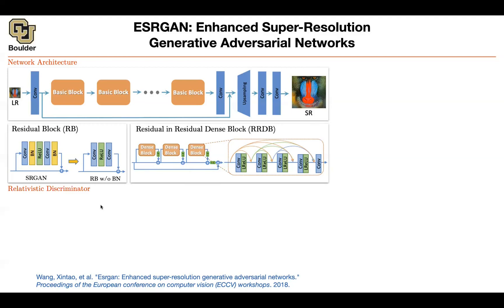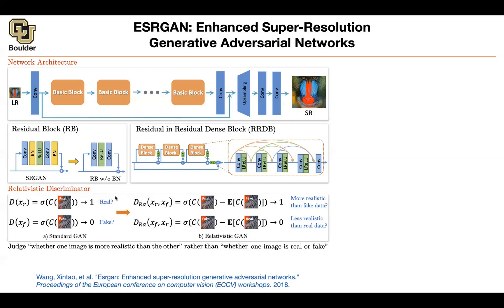That was for the architecture. Now, what is your loss function? In a regular GAN loss — the usual standard GAN loss — you show the discriminator a real image, featurize it, push the features through sigmoid, and it needs to say whether it's real or fake. The discriminator should correctly say these are real and these are fakes.